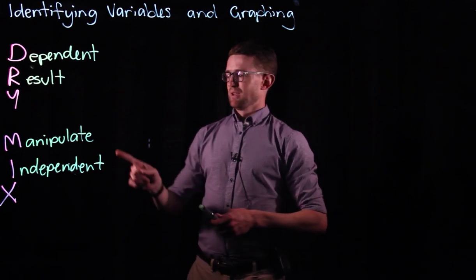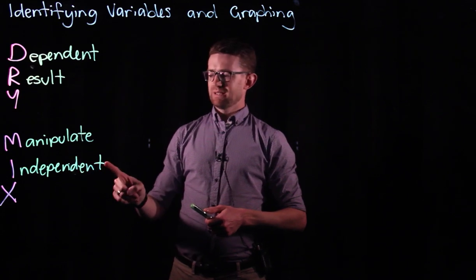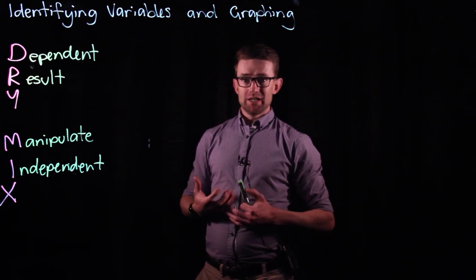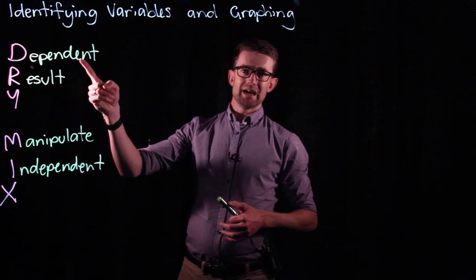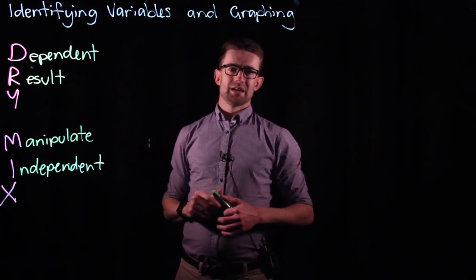It's the temperature. So the temperature is the thing that we will manipulate. It's the independent variable. And the activity of the enzyme is what we don't know until we actually complete the experiment. So the activity of an enzyme will be the dependent variable. That's our result.